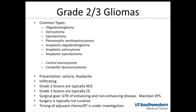Grade 2-3 gliomas are the most common entities in adult practice. The most common are oligodendrogliomas, astrocytomas, and ependymomas. Less common are pleomorphic xanthoastrocytomas (PXA), seen perhaps a few times per year, and then the anaplastic versions of the above: anaplastic oligodendrogliomas, astrocytomas, ependymomas, and anaplastic PXAs.